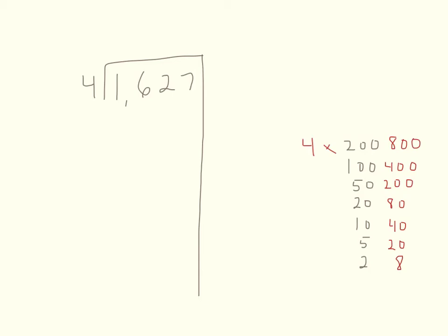Now that I have my multiples, I go to my division problem and look for the biggest number on the chart that is still less than the dividend. The biggest number is 800. We could continue the chart higher to get closer, but we'll use this. So 800 is my biggest multiple of 4, and I write it on the left side of the line. The partial quotient is 200, since 200 times 4 is 800.